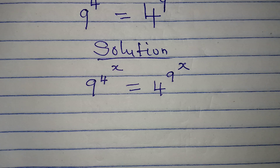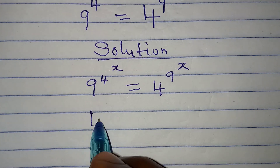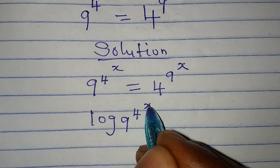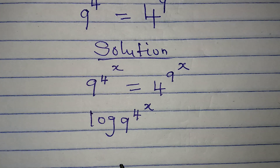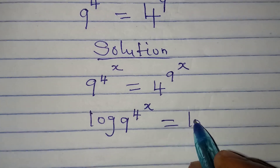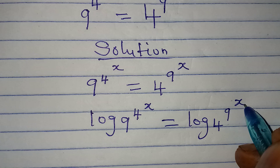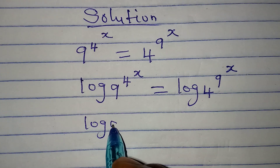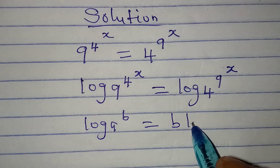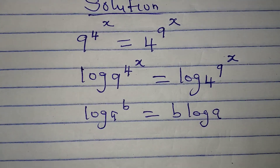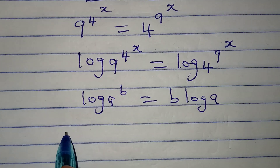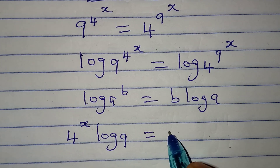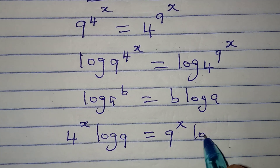The first thing I will do is take the log of both sides. So I have logarithm of 9 to the power of x, logarithm of 4 to the power of x. That would be log of 4 to the power of 9 to the power of x. Remember, if you have log a to the power of b, this is the same thing as b log a. So I will take the power behind, giving us 4 to the power of x times log 9, equal to 9 to the power of x times log 4.